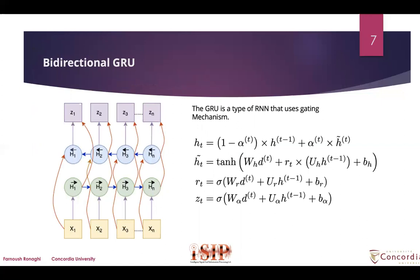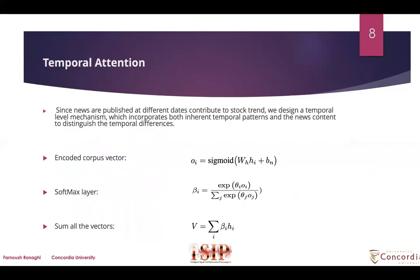For encoding temporal information embedded within the news corpus and financial time series, a gated recurrent neural network is integrated within the ND-SMPF fusion framework. The GRU is a type of recurrent neural network that uses a gating mechanism to track the state of sequences without requiring separate memory cells. To encode temporal layers, we adapt a noisy bidirectional GRU to fit X. Since news published at different dates contributes to stock trends, we design a temporal-level attention mechanism which incorporates both inherent temporal patterns and news content to distinguish temporal differences.